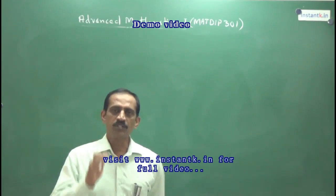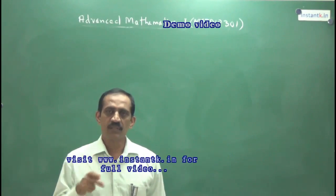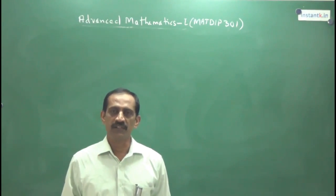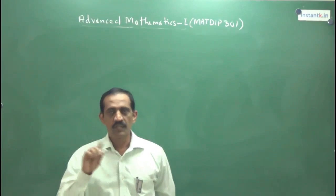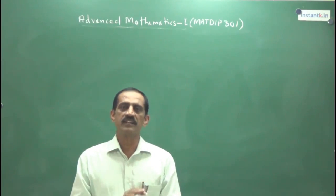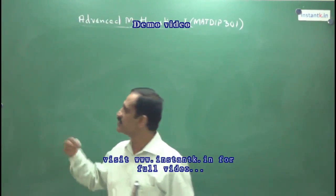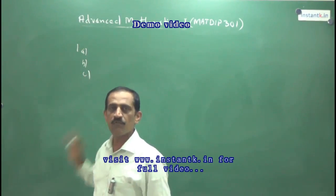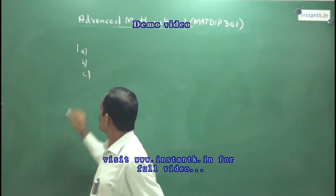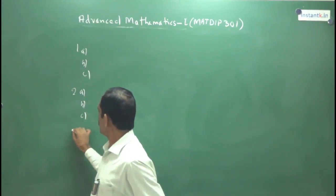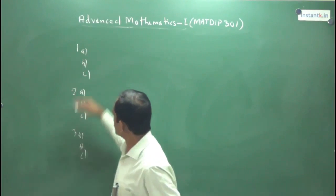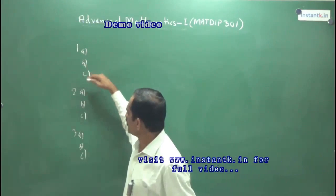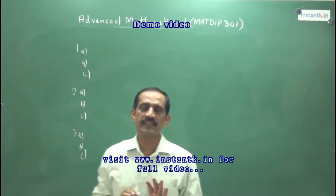Here, the question will be asked for 100 marks. For 100 marks, 8 questions will be asked, and each question carries 20 marks. In each question, there will be 3 subdivisions — A, B, C — or sometimes A, B, C, D, four subdivisions. Sometimes instead of 3 questions, 4 questions will be asked, and that entire question carries 20 marks. The marks could be distributed like 6, 7, 7.